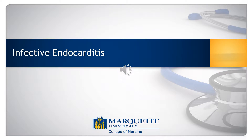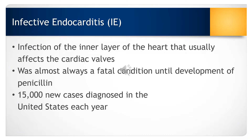The topic for this section is infective endocarditis. Infective endocarditis is an infection of the endocardial layer, which is the innermost layer of the heart. It is common within the heart valves. Infective endocarditis was fatal until the development of penicillin, and even though we have lots of antibiotics, there are approximately 15,000 new cases of infective endocarditis diagnosed each year in the United States.